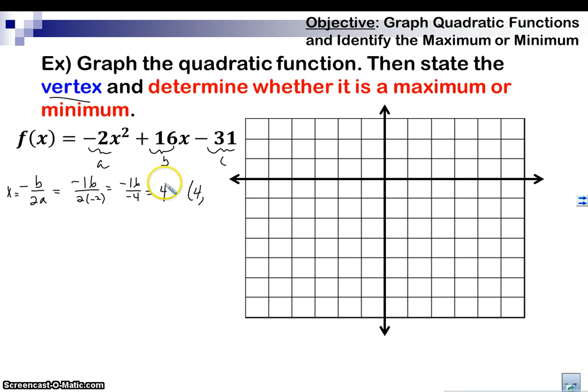We're going to plug this 4 in to x to get our y value. So f of 4 is negative 2 times 4 squared plus 16 times 4 minus 31. We're going to plug all that in and add it all together, and when all is said and done, we're going to get 1. So our vertex is 4 comma 1. So we're going to go and plot that: 1, 2, 3, 4, and 1. It's right here.